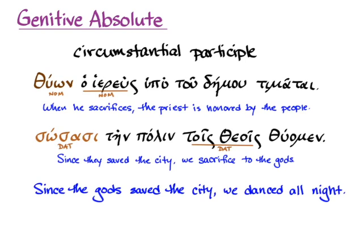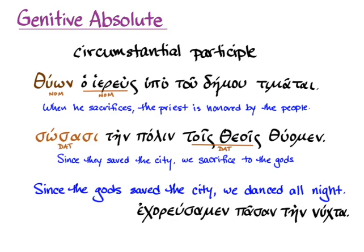But what would happen in a sentence like this: 'since the gods saved the city, we danced all night'? The main clause is simple — 'echorelsamen pasante nukta' — but if we want to turn the subordinate clause into a participial phrase, which the Greeks really liked to do, it's a little tricky. The only people or things in the main clause are 'we' as part of the verb and 'the night' as the accusative extent of time. There's nothing in the main clause for the participle to agree with — we're not involved with the saving, and neither is the night.